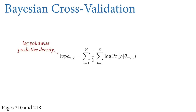There's a thing called the log pointwise predictive density (lppd) that we use for Bayesian predictive tasks to assess their uncertainty. It's log because we work on the logarithmic scale for accuracy and numerical stability. It's pointwise because we consider each point one at a time, like in leave-one-out cross-validation. And it's a predictive density, meaning it's a probability density constructed on observable values, trying to predict where they would be according to the model's perspective.